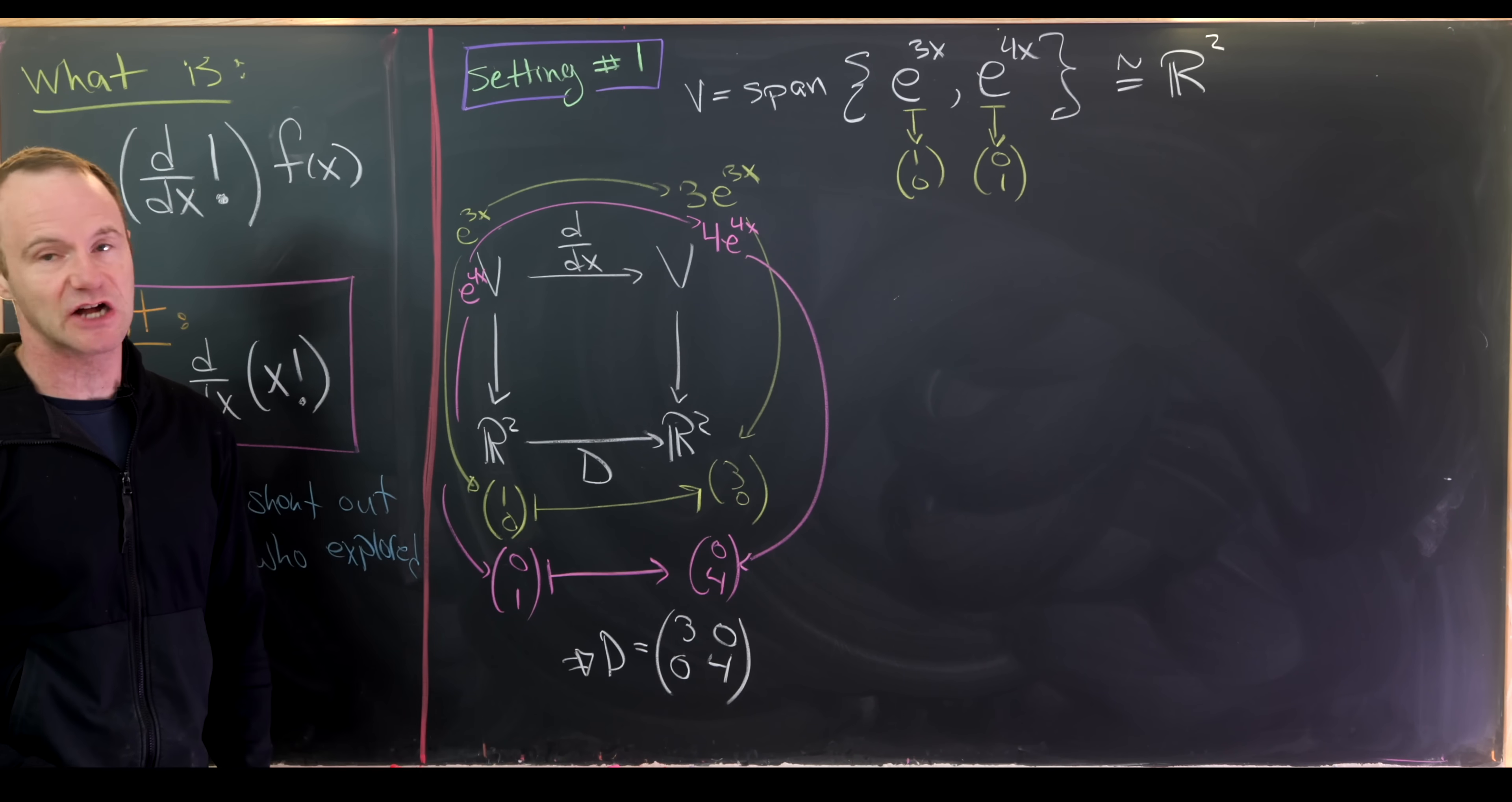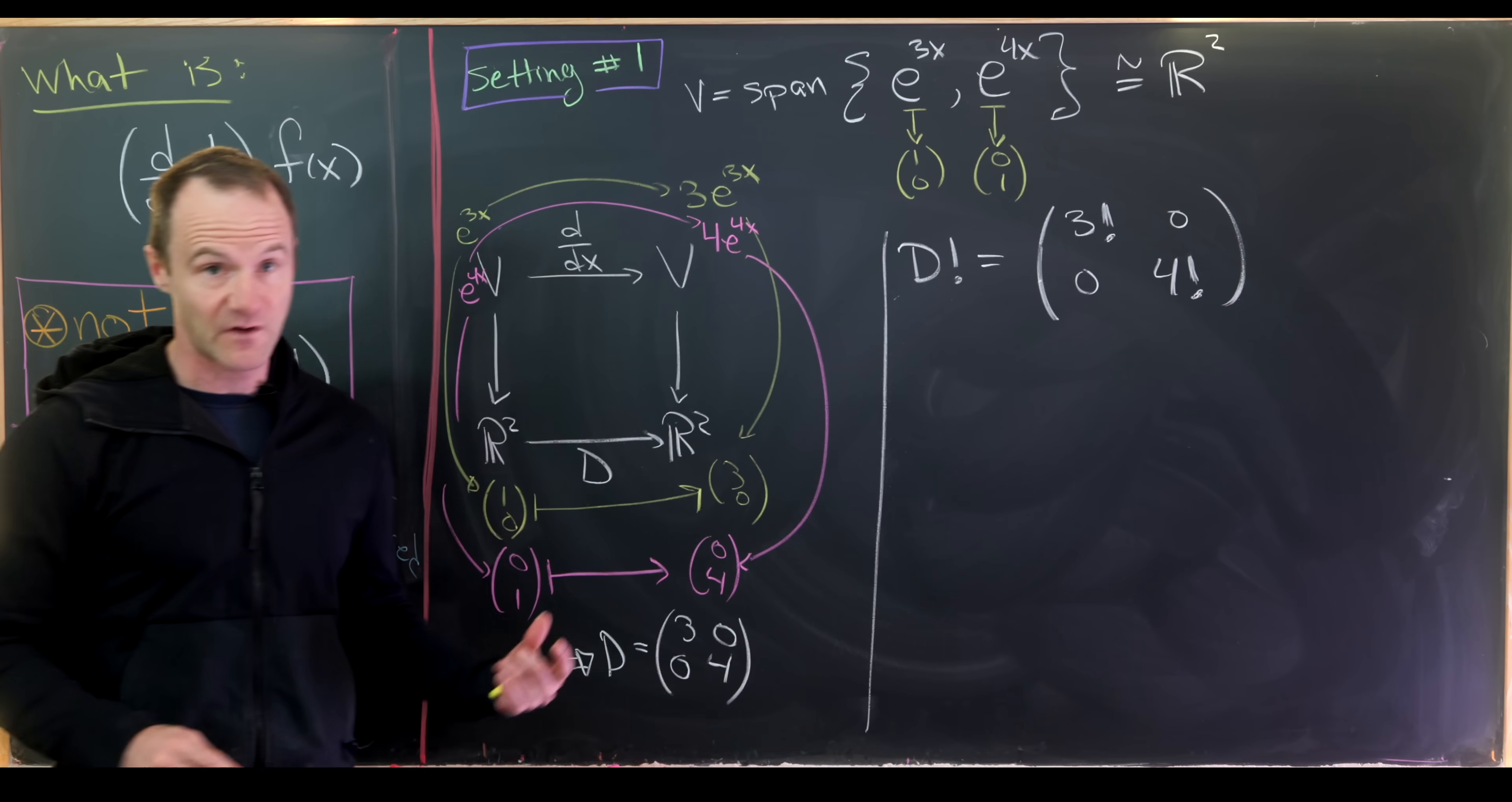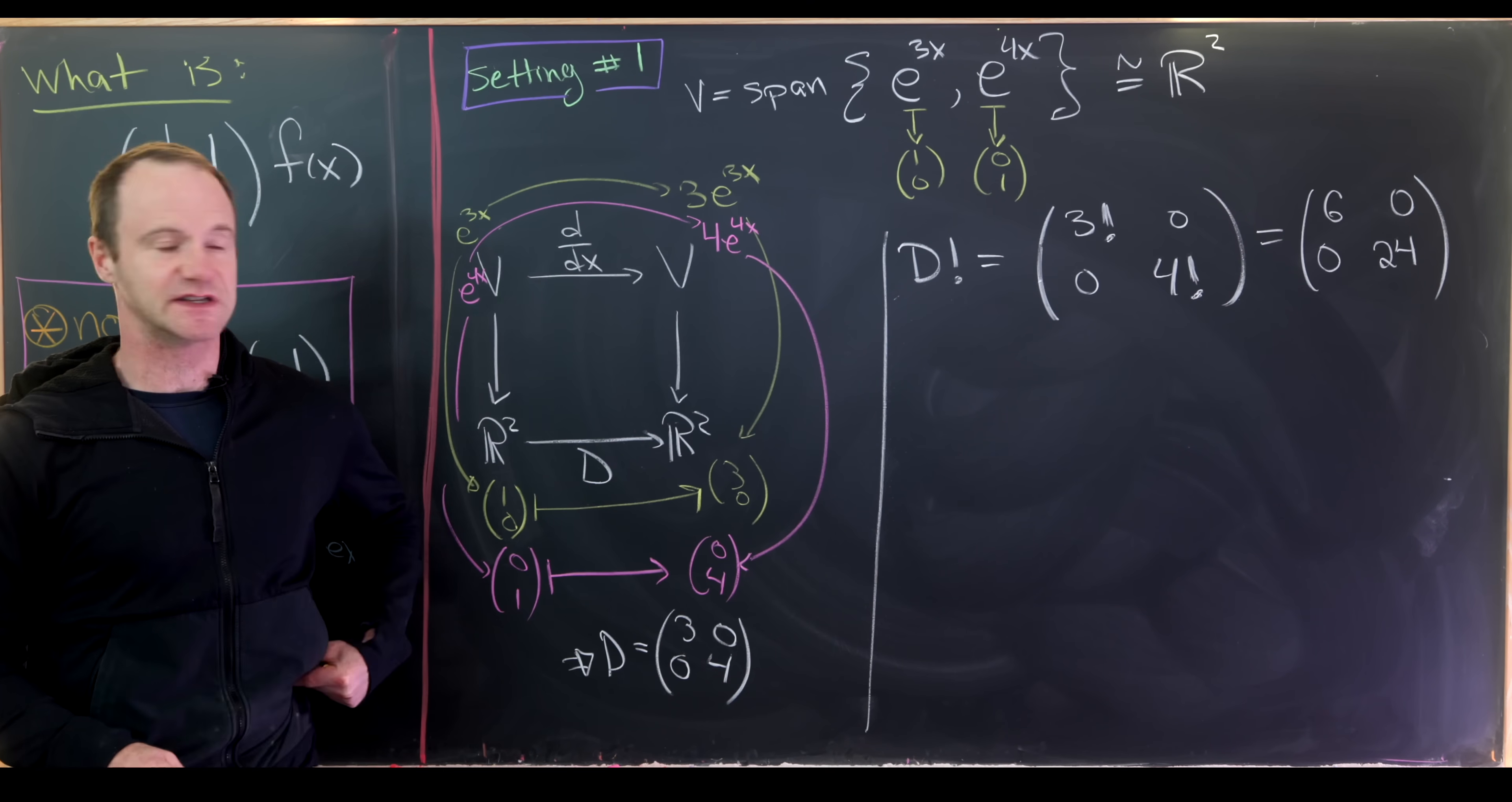But now from here I think there's a logical way of finding the factorial of this matrix. So I would say the factorial of this matrix would just be the factorial of the diagonal elements. And this is the standard way of applying a function to a matrix. Here that function is this taking the factorial action. But then we know 3 factorial is 6 and 4 factorial is 24, so we have this diagonal matrix 6, 0, 0, 24.